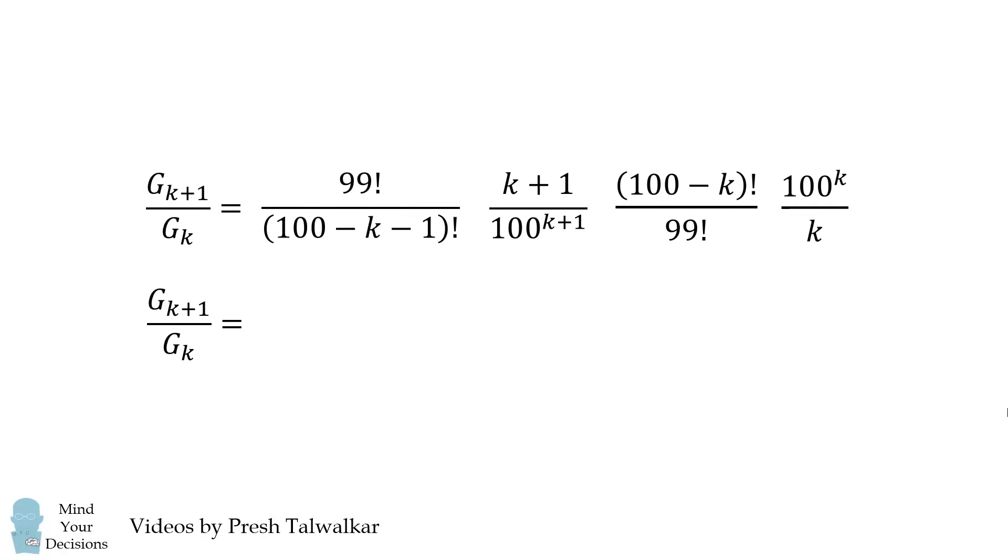And now we can simplify this further by canceling and simplifying terms. Notice that 99 factorial cancels out. These two factorials will simplify to be 100 minus k. We then have these two terms cancelling out to be 1 over 100. And finally we have k plus 1 all over k.